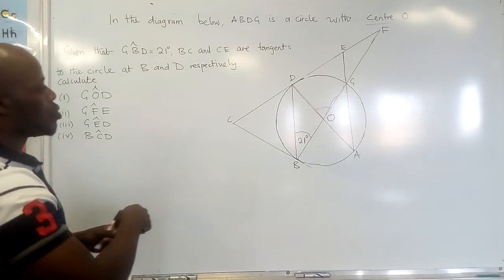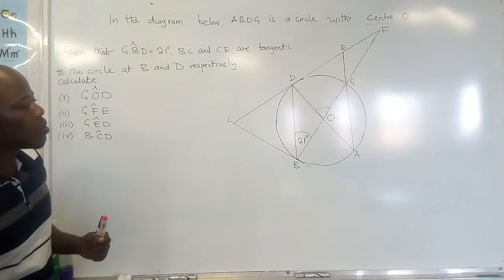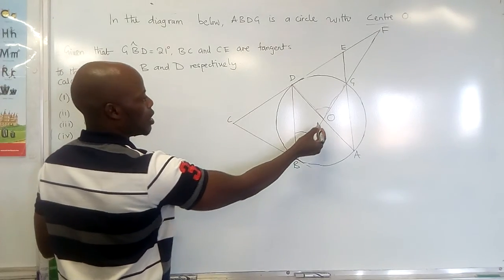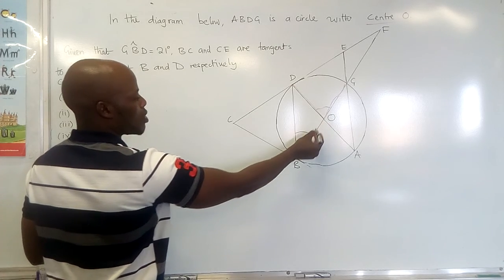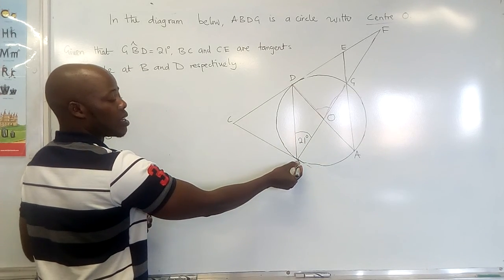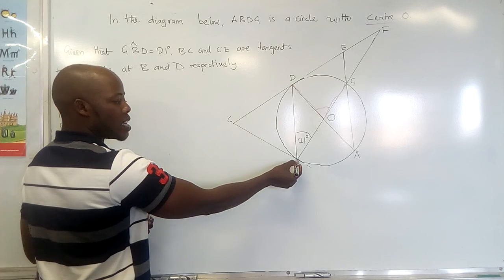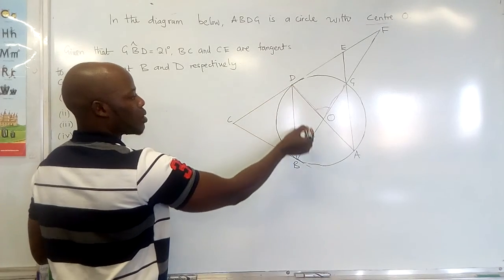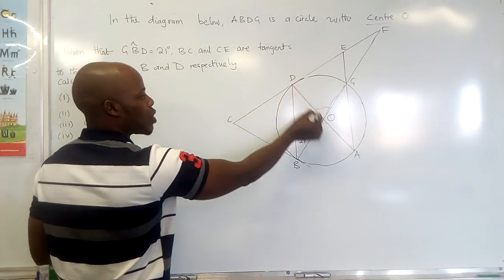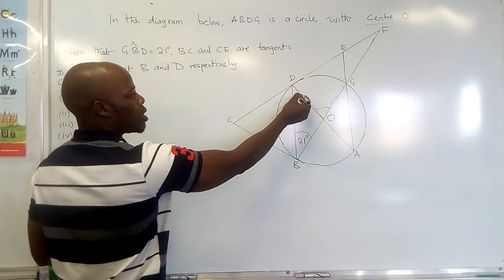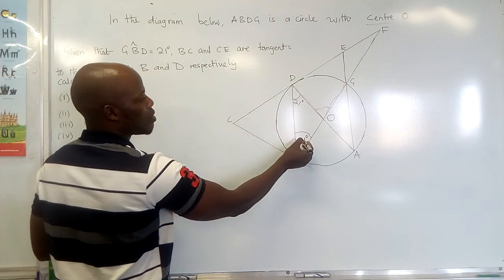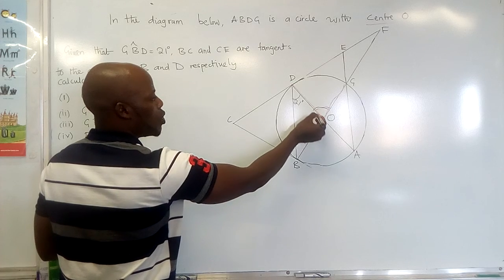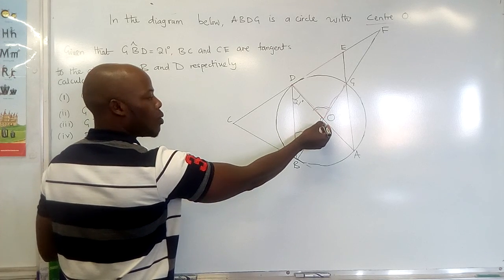Let's start with the diagram. We know that the line which passes through the center and touches the tangent line at point P is a radius, and this is also a radius. So we know that this is an isosceles triangle, where this angle is also 21 degrees, this is 21 and this is 21 degrees.